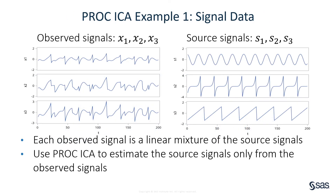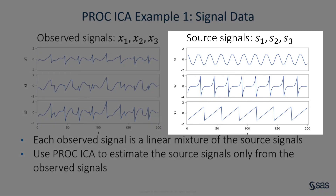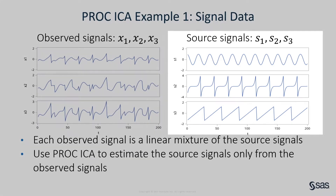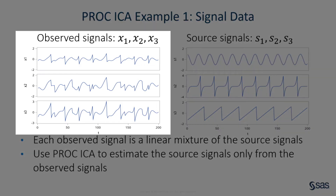The first example uses PROC ICA to perform independent component analysis on simulated time signal data. The figure on the right shows the three source signals S1, S2, and S3. The horizontal axis displays the time index, and the vertical axis displays the amplitude of the signal. The figure on the left shows the observed signals S1, S2, and S3, which are linear mixtures of the three source signals.